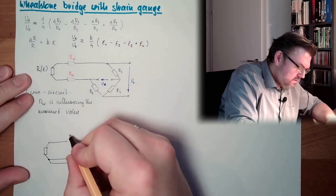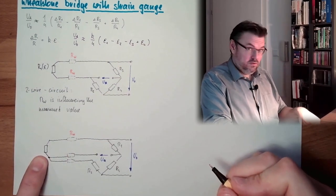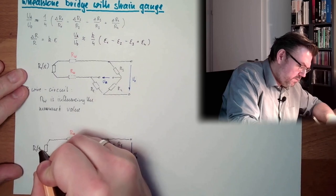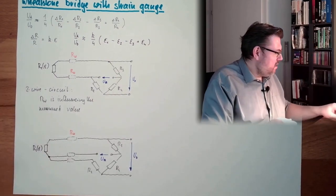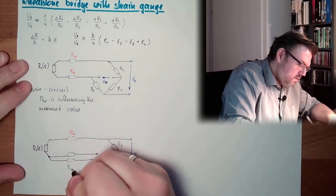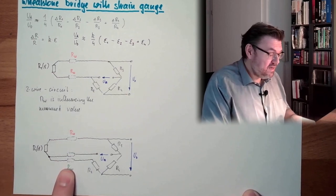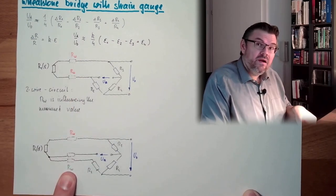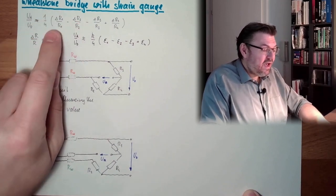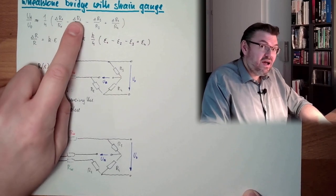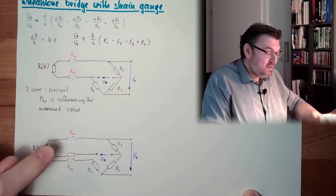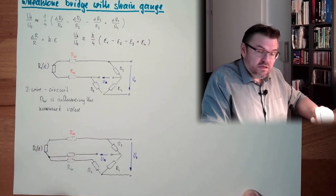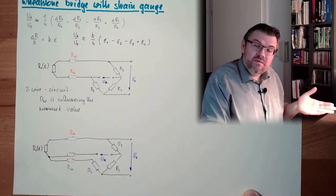Here I have wire resistance. This is R1 again, a function of epsilon — the strain gauge. Here we also have a wire. However, this wire resistance is already in the branch of R2, and the branch of R2 is negative. So if this wire and this wire are the same length, these virtual changes compensate each other — one is in the R1 branch and one is in the R2 branch, compensating perfectly.